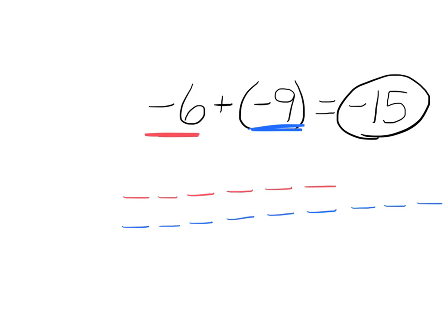You could think of this as money and get to the same answer. Let's say you owe one friend six dollars and you owe another friend nine dollars. Whenever it's negative, it means you owe. If you owe one friend six bucks and another friend nine bucks, you are in the hole fifteen dollars, or negative fifteen.